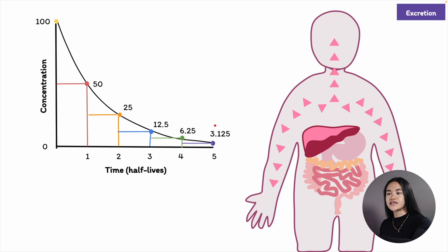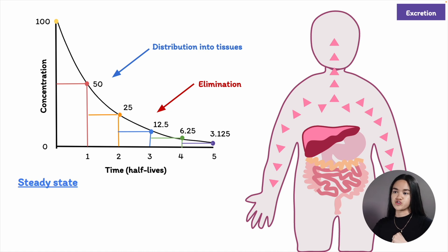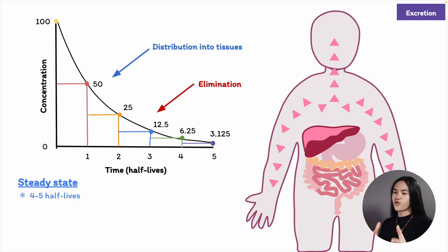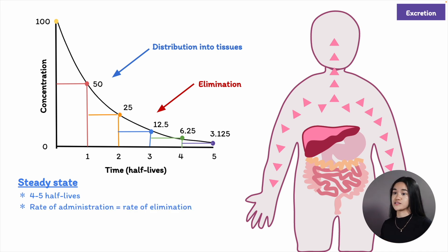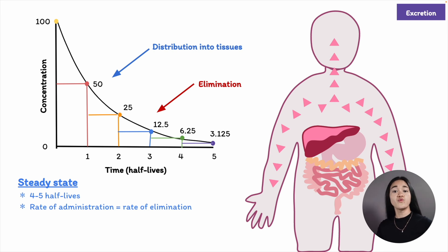We can use half-life to predict steady-state concentration — for first-order kinetics, it takes about four to five half-lives to reach steady state, which is where the concentration doesn't change, meaning the rate of administration equals the rate of elimination. So the amount dosed will be eliminated after each dosing interval, and medication levels in the body remain steady.